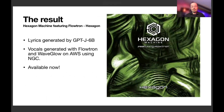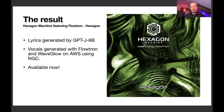The result: there's a single now available on all streaming platforms called 'Hexagon Machine Featuring Flowtron' — the single 'Hexagon.' I found a pre-trained language model called GPT-J 6B on the internet and used it to generate vocal lyrics. Then I ran those vocals through Flowtron and WaveGlow on AWS using NGC, created WAV files, dragged and dropped them into the song, applied effects, did the mixing and mastering, and released it.